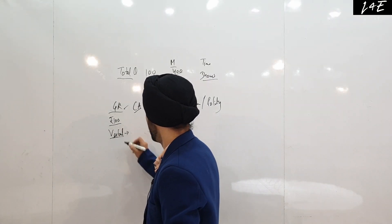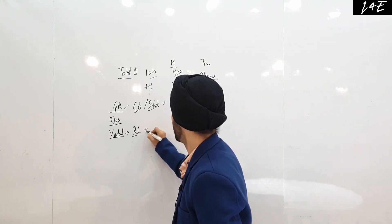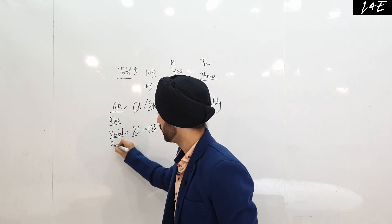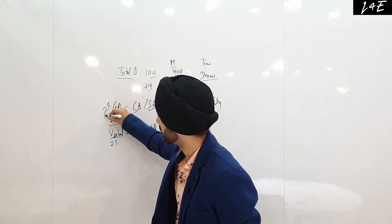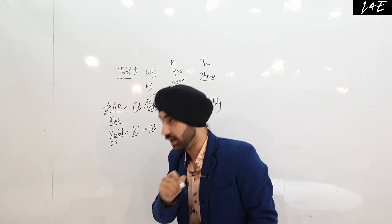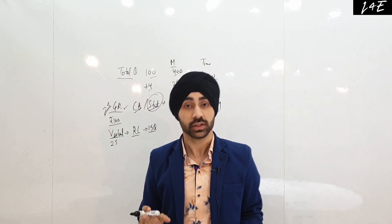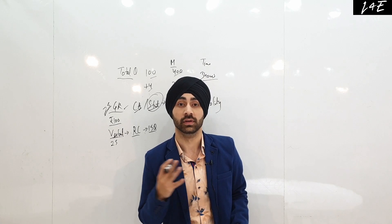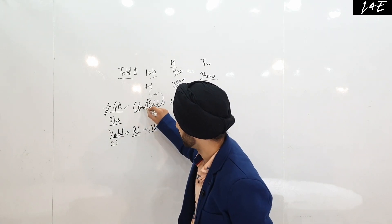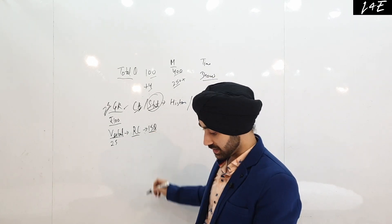Coming to the Verbal section: the major portion is Reading Comprehension (RC), which accounts for 15 questions out of 25. In terms of difficulty, the level of the exam is easy to medium — moderate to difficult questions are very rare. I'm expecting that this year current-affairs-based questions will be more, as that trend is seen in all exams. To score well, you need to be good at RC.